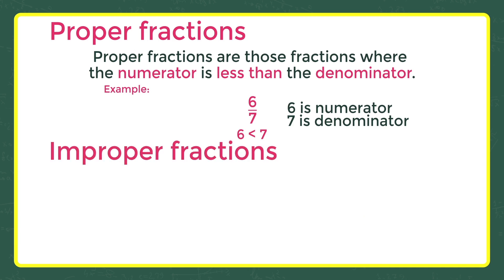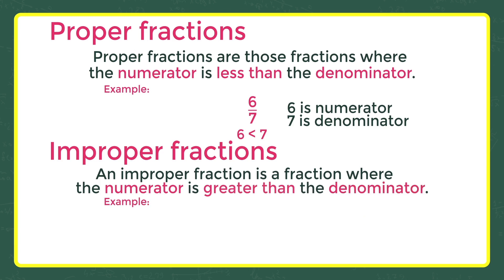An improper fraction is a fraction where the numerator is greater than the denominator. Example: 7 by 6. Here, 7 is the numerator and 6 is the denominator. As 7 is greater than 6, it's an improper fraction.